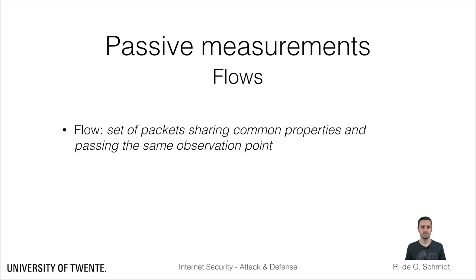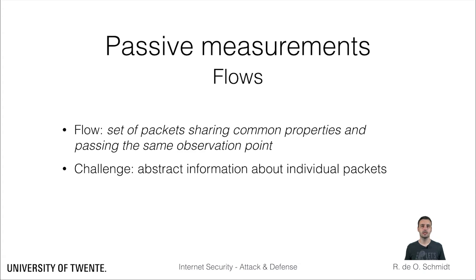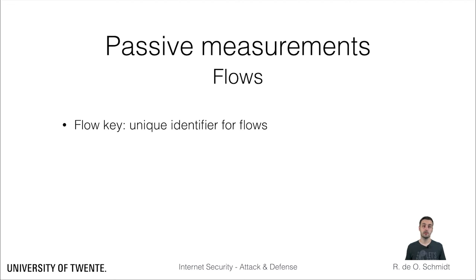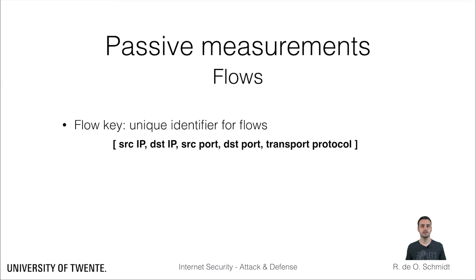A flow is defined as a set of packets that share common properties passing at an observation point. The main challenge of working with flow data, especially for security applications, is that flows only report a summary of communications, abstracting information about individual packets. Every flow is identified by a unique flow key. The most known and most used definition is the default for NetFlow version 5 from Cisco, which consists of source and destination IP addresses, source and destination ports, and the transport protocol.